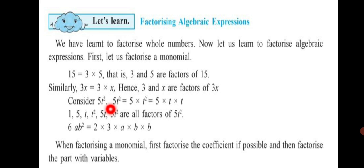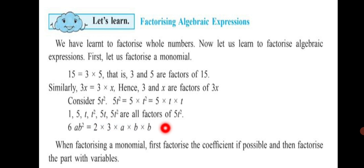Consider 5t². It can be written as 5 × t², which equals 5 × t × t. So 5, t, and t are all factors of 5t². Similarly, 6ab² can be written as 2 × 3 × a × b × b, showing only multiplication as the operation, forming one term called a monomial.